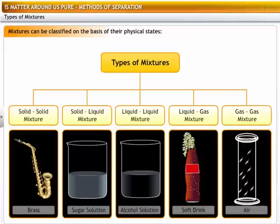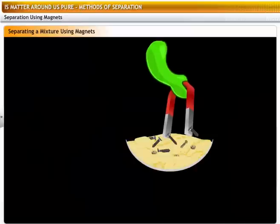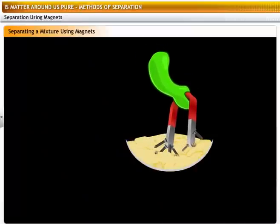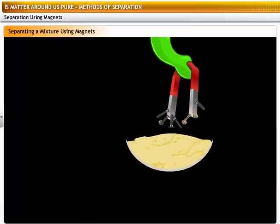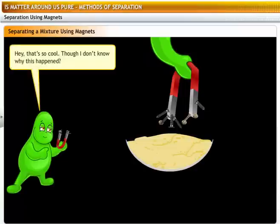If you are provided with a sample of a mixture and asked to separate the constituents, you first need to figure out the type of the mixture. Hey, that's so cool. Though I don't know why this happened.